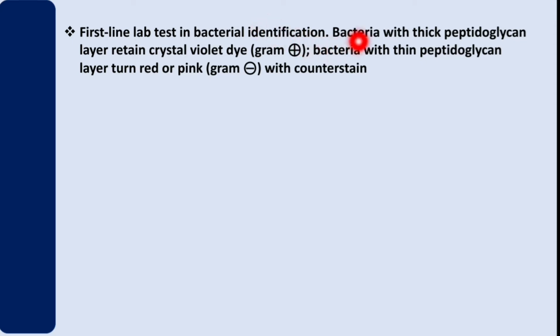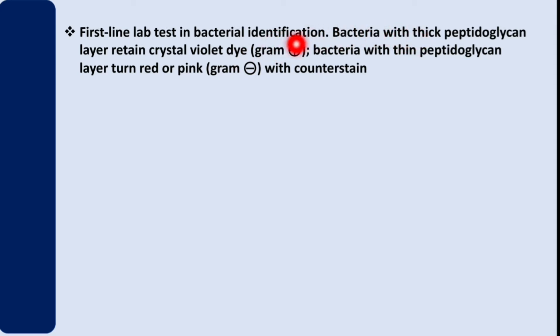Bacteria with a thick peptidoglycan layer retain crystal violet dye, and those ones are called Gram positive — thick peptidoglycan, Gram positive.